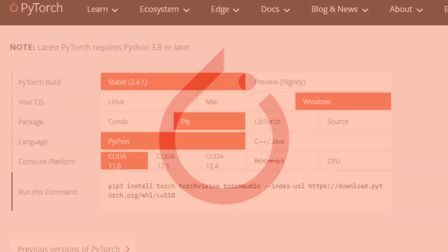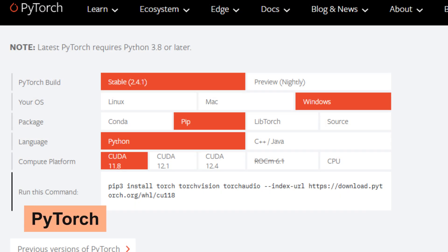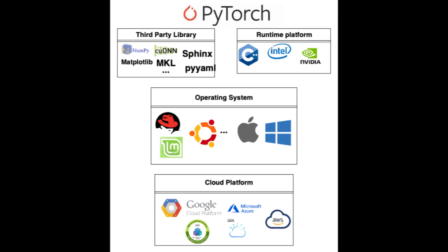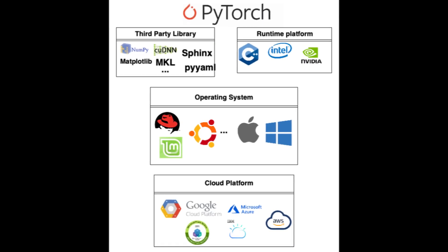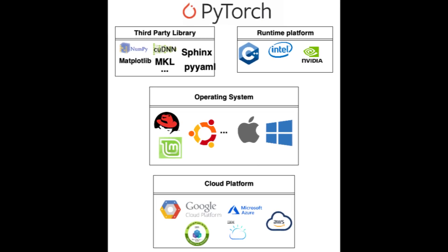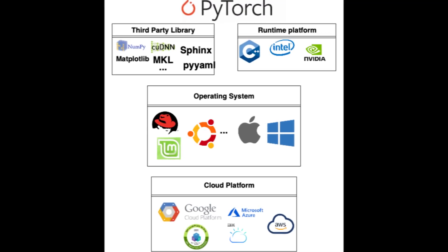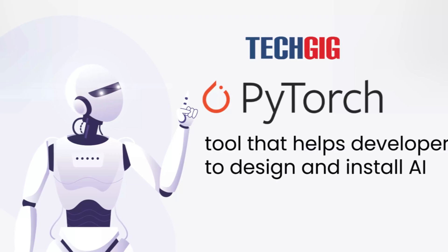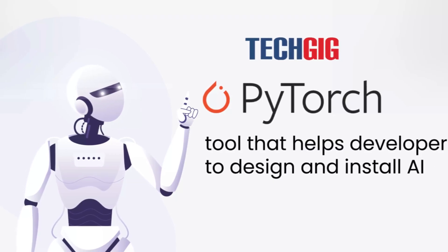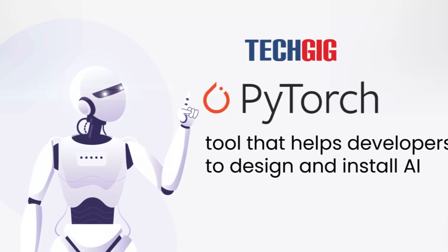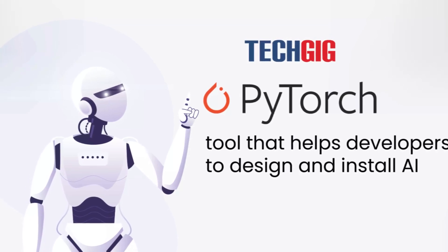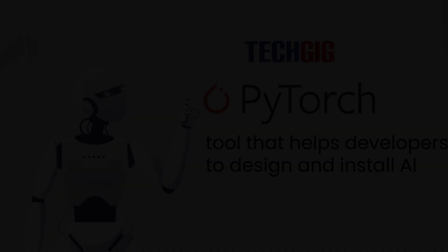Next in our list is PyTorch, an open source machine learning framework developed by Facebook's AI Research Lab. It's widely used for applications in computer vision and natural language processing (NLP). PyTorch provides flexibility and ease of use with its dynamic computation graph feature.